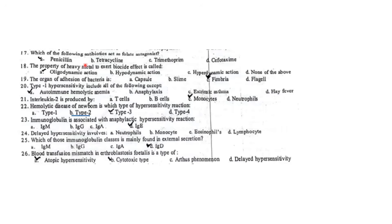Which of the following antibiotic acts as a folate antagonist? Trimethoprim is the answer. The property of heavy metals to exert biocidal effect is called oligodynamic action. The organ of adhesion of bacteria to mainly a desired surface is fimbriae. Fimbriae is mainly used in adhesion. Capsule is also used in adhesion, but fimbriae is a better answer.